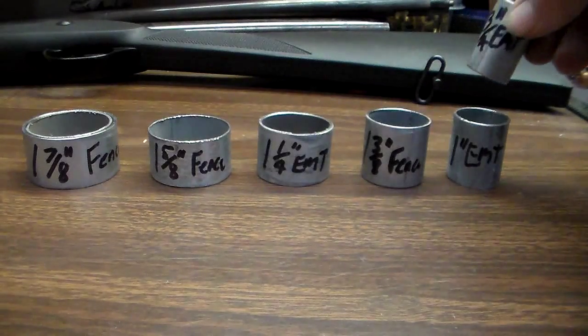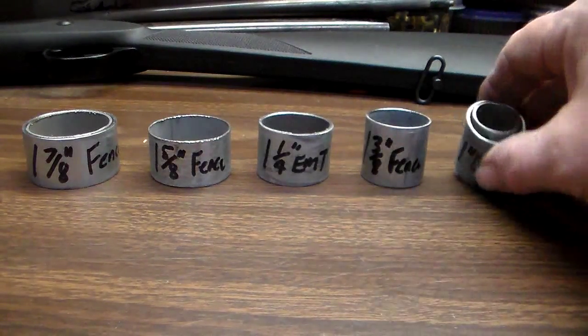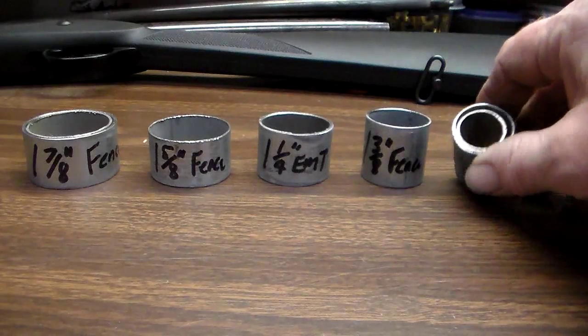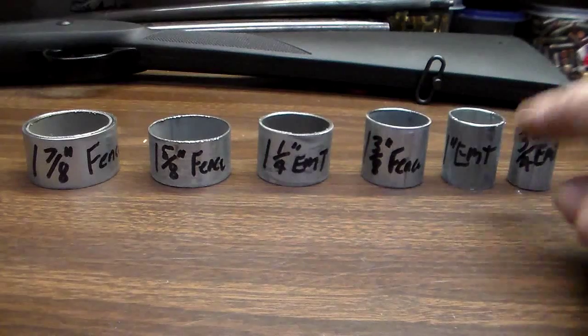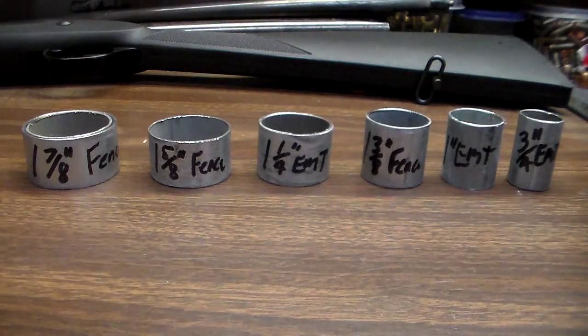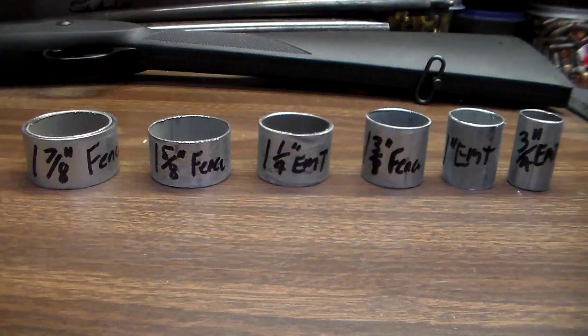And of course the one-inch EMT, the three-quarter is about as close as you're going to get with that. That's a little sloppy, but that's about as close as you can get. So if you want to make fittings for three-quarter inch pipe, you pretty much have to make them out of one-inch EMT. There's not a lot out there.